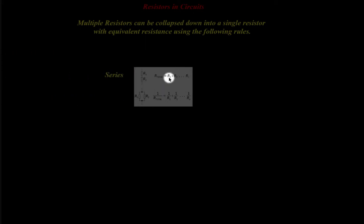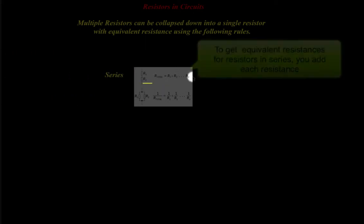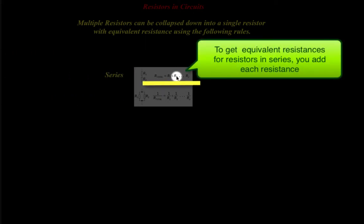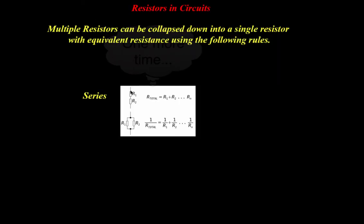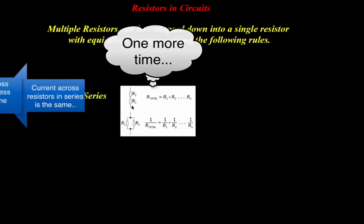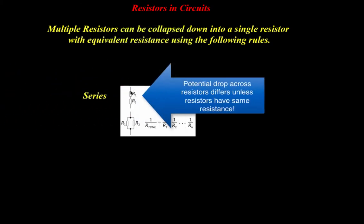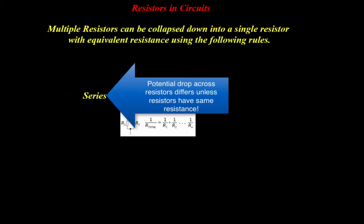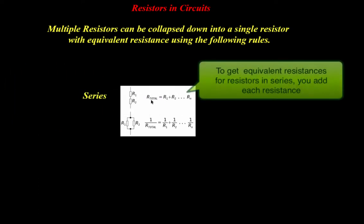You can calculate the equivalent resistance by doing a summation of each individual resistance. The charge across these resistors is going to be the same, the current is going to be the same, whereas the potential drop across these resistors is not. The way you get the equivalent resistance is you just add up each individual resistor that is in series, however many there are.